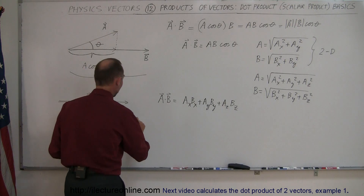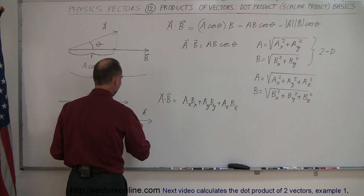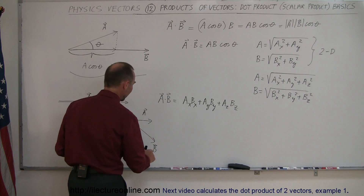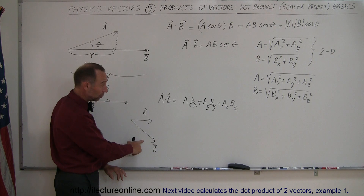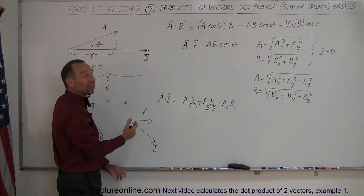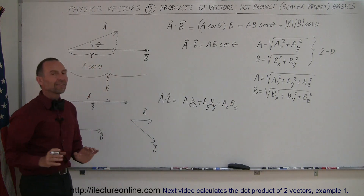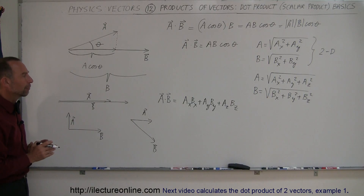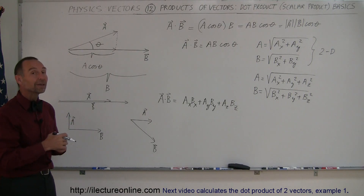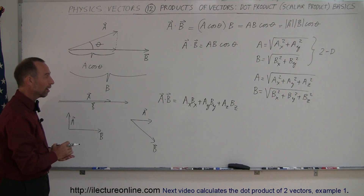For example, if you have a vector A pointing one way and a vector B pointing another way such that B has a negative y-component, then that y-component must be negative in the calculation. If there are no z-components, then z simply goes to zero. In our next video we'll do some examples of how to find dot products of vectors.